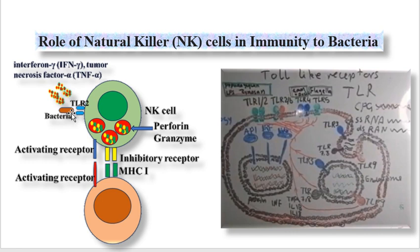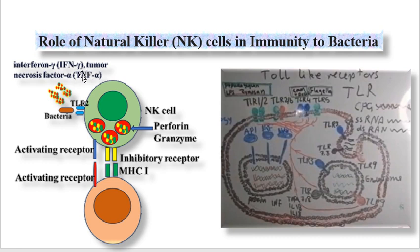The toll-like receptor on the surface of the natural killer cell recognizes the pathogen-associated molecular pattern. Bacteria interact with toll-like receptor number 2, leading to activation of the natural killer cell. The activated natural killer cell produces perforin, which induces perforation and death of the bacteria. It also produces cytokines — namely interferon gamma and tumor necrosis factor alpha — which have pro-inflammatory effects and attract more macrophages, providing more cytokines and a protective role.